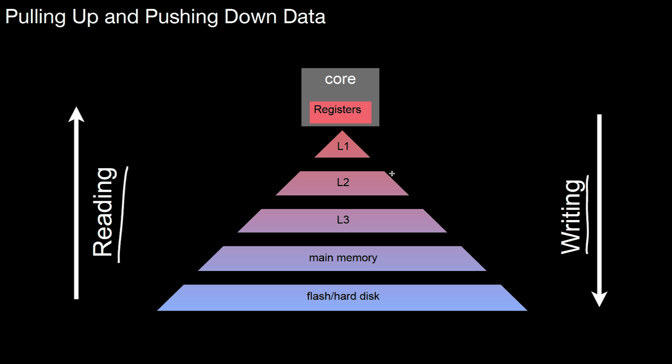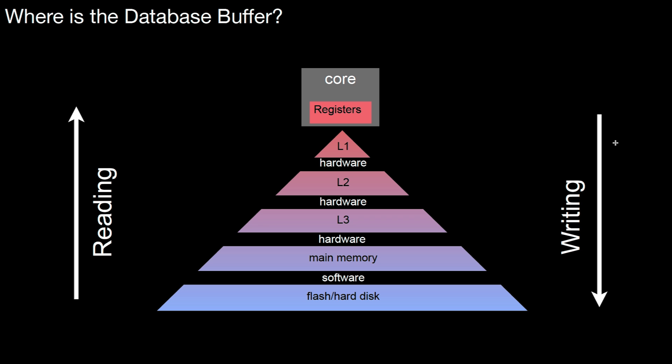When we update something in the registers, the updates trickle down through all the layers and eventually make it to hard disk. As explained in the previous video, there have to be components taking care of the pulling up and pushing down of data. Depending on which layers in the storage hierarchy we're talking about, it may be implemented in hardware or in software.